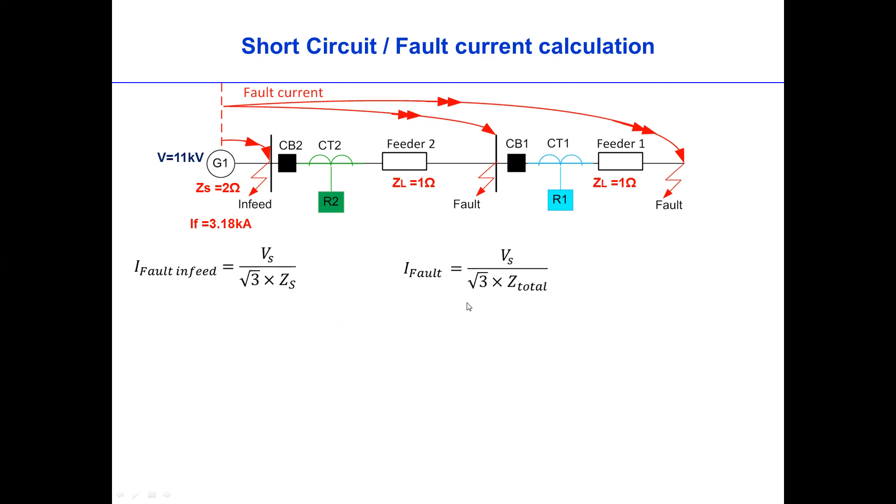And then the fault current at this bus, it will be the source impedance plus the line impedance. That means the total impedance up to the fault point. So this fault current is 2.12.